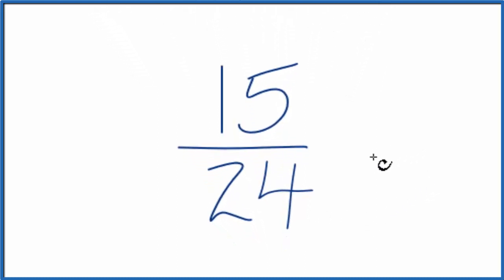To do that, we need to find the greatest common multiple between 15 and 24. So let's list the multiples for each, the numerator here and the denominator. 15 we have 1 times 15.